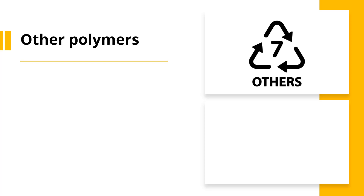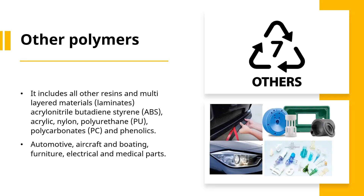Number 7 includes all other resins and multilayered materials such as laminates, acrylonitrile butadiene styrene, acrylics, nylon, polyurethane, polycarbonate and phenolics. These polymers are being used in the automotive, aircraft and boating industry, also in furniture and electrical and medical parts. They are mostly specialty products made with more than one polymer, so they cannot be recycled. These were in limited volume at the time the codes were established.